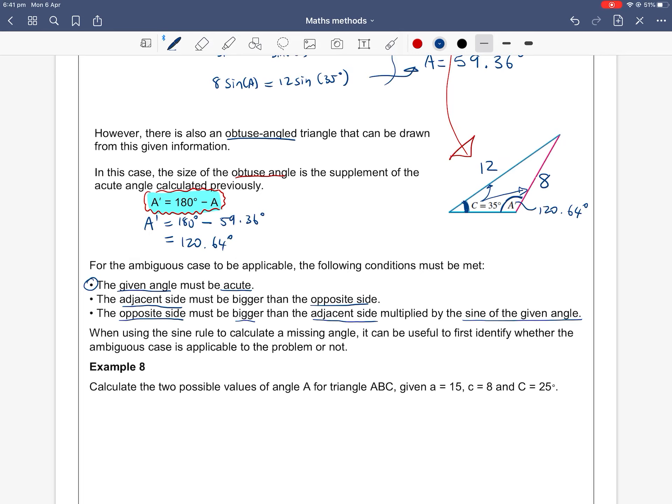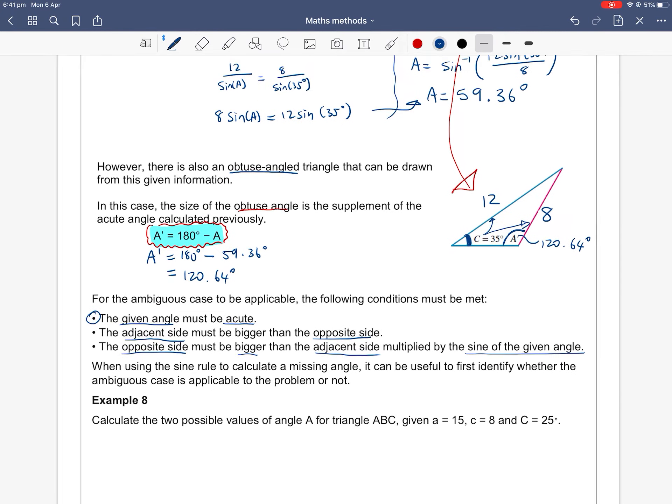So when we're using the sine rule to calculate the missing angle, it can be useful to first identify whether an ambiguous case is applicable to the problem or not. But in any case, in your exam, always, always, always check for the ambiguous case when you're using the sine rule, because you could have two possible answers.